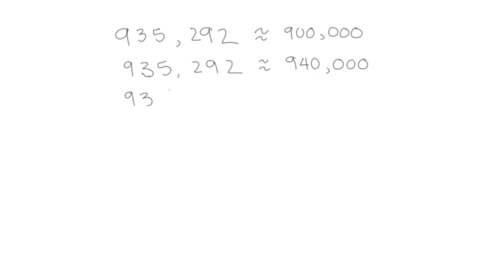Same number again, but this time we're going to round to the 1,000s place. The 100,000 and the 10,000 stay the same. We look at the 5 — we could leave it at 5,000 or round up to 6,000. The 292 tells me it's closer to 5,000, so we'll leave it at 5,000. All of these are valid estimates for our original number, but they vary depending on which place value we're rounding to.